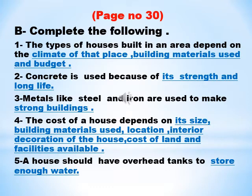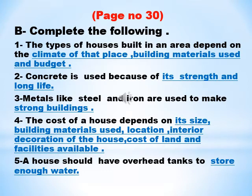Now move on to page number 30. Complete the following sentences. The type of houses built in an area depend on the climate of that place, building materials used, and budget. Number two: concrete is used because of its strength and long life. Number three: metals like steel and iron are used to make strong buildings. Number four: the cost of a house depends on its size, building materials used, location, interior decoration of the house, cost of land, and facilities available.